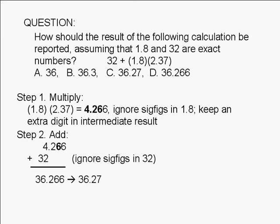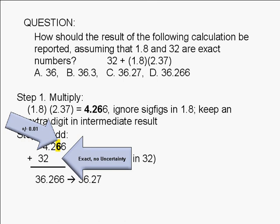Since the last significant digit in 4.266 is in the second decimal place, its uncertainty is at least plus or minus 0.01. On the other hand, we are told that the number 32 is exact. That means it has no uncertainty.